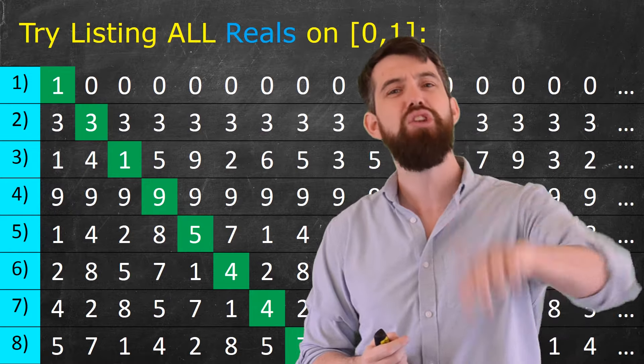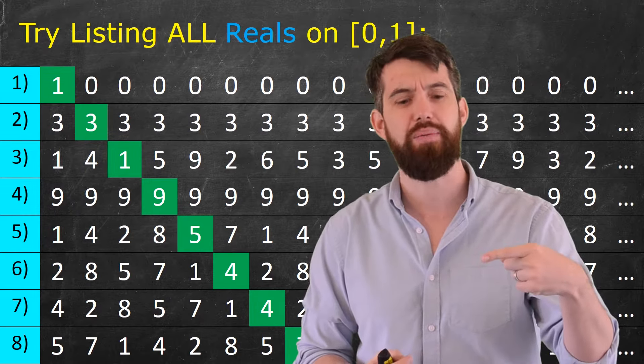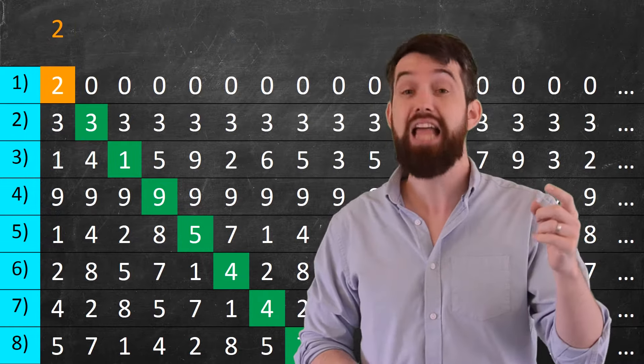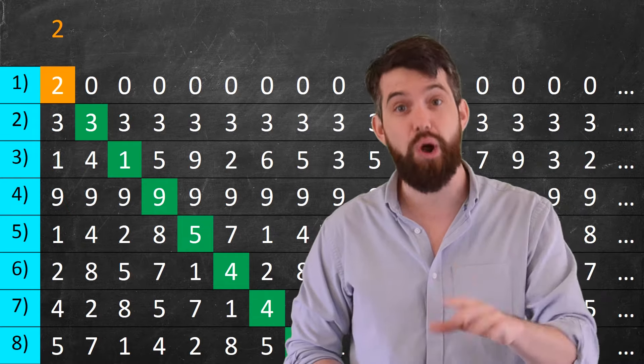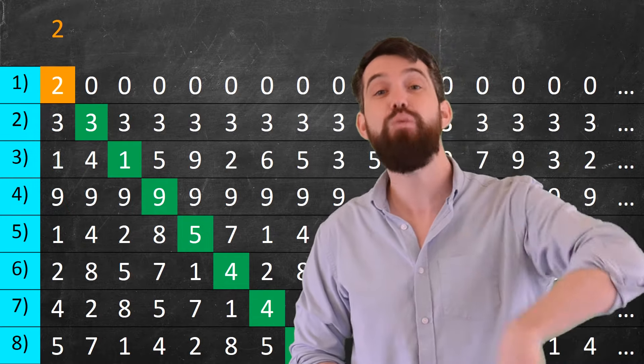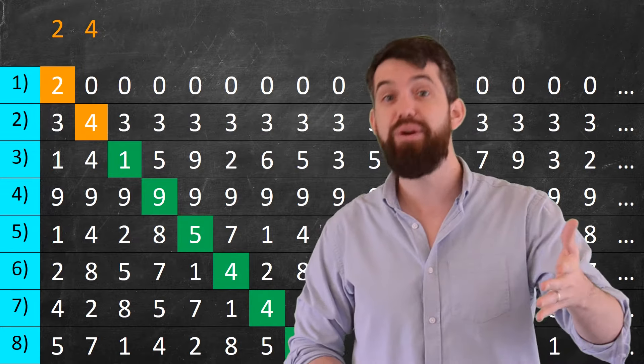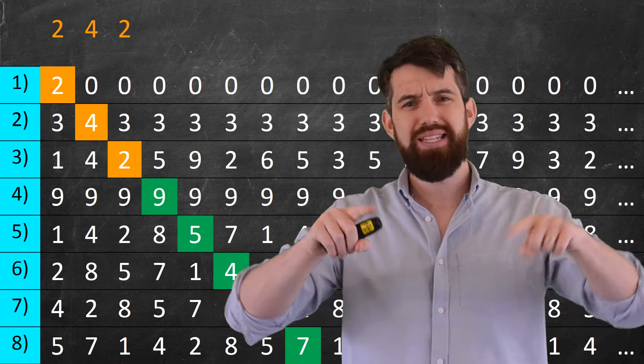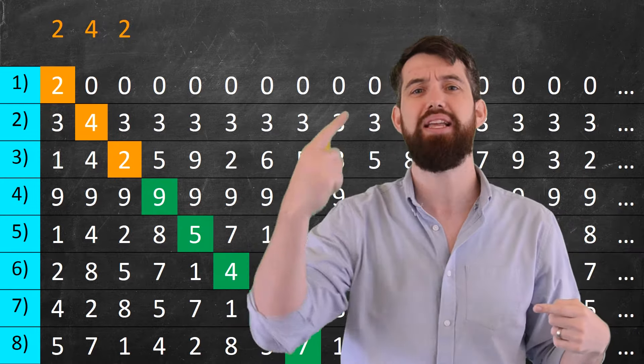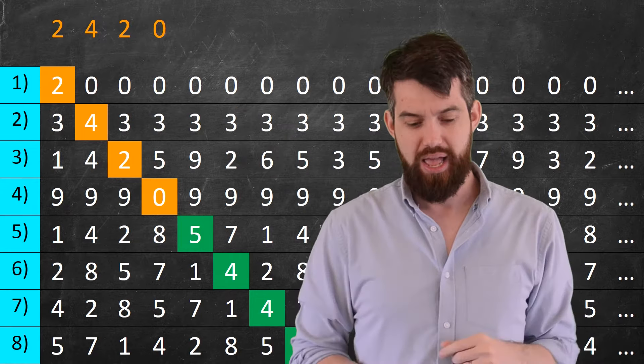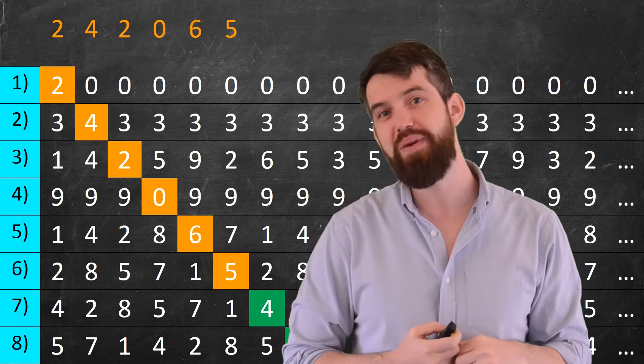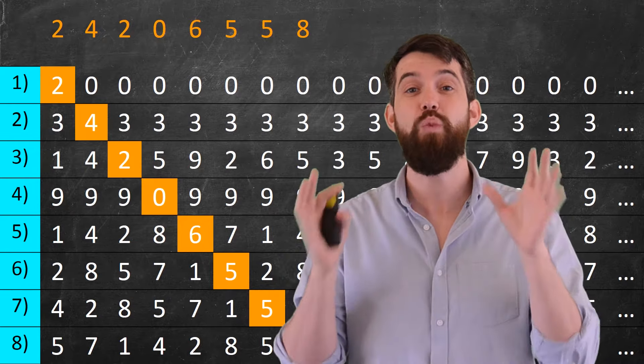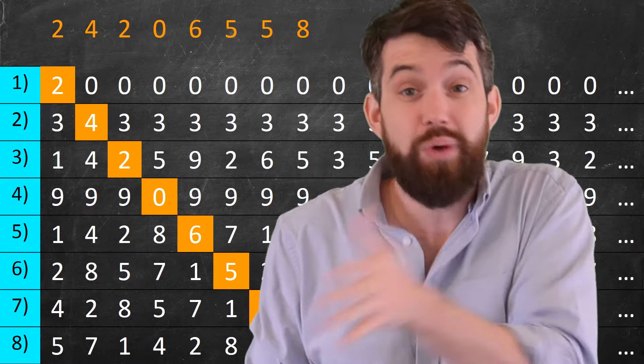What I'm going to do is I'm going to make a new real number that tweaks along this diagonal. So, the one that we have here, I'm going to change that one and make it a two. Then I look at the three that we have, that's in the second row, in the second location, and the three, I'm going to add one to it and make it a four. The one, I'm going to add one to it and make it a two. The nine, I'm going to add one, but instead of making it a ten, I'm going to cycle around and make it a zero. So, the nine is going to become a zero, the five is going to become a six, the four is going to become a five, the four is going to become a five, and the seven is going to become an eight.